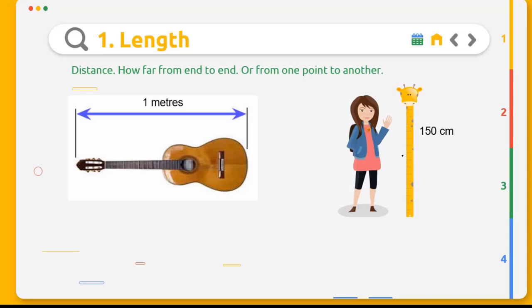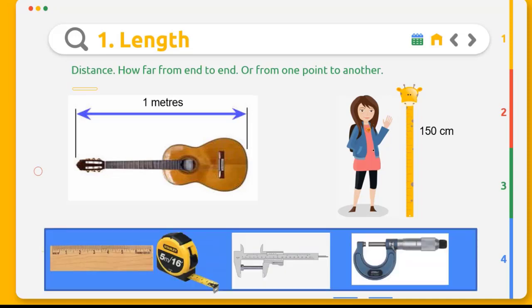To find the height and length, you need a tool. All the tools are standardized, like ruler, measuring tape, vernier caliper, and micrometer screw gauge.